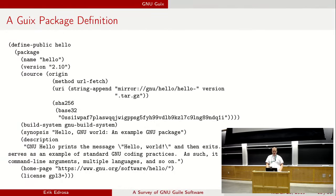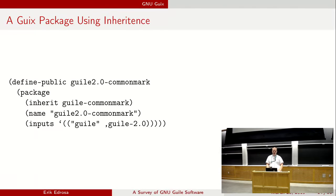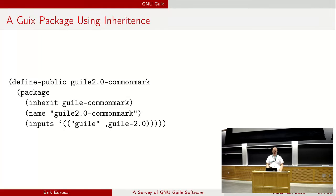As you can see, some Scheme code is actually part of this DSL. For the URL part, it uses 'string-append,' where it can access the version field. So when you make a modification to a new version, you don't have to edit the string manually — you just use string-append with the version and it's done automatically. This DSL can also do other things. For example, for Guile 2.0 we find a package called guile2.0-commonmark that inherits from the original guile-commonmark package. You just inherit from the parent package, get all its details, and make the change you want — here just changing the name and the input to use Guile 2.0.